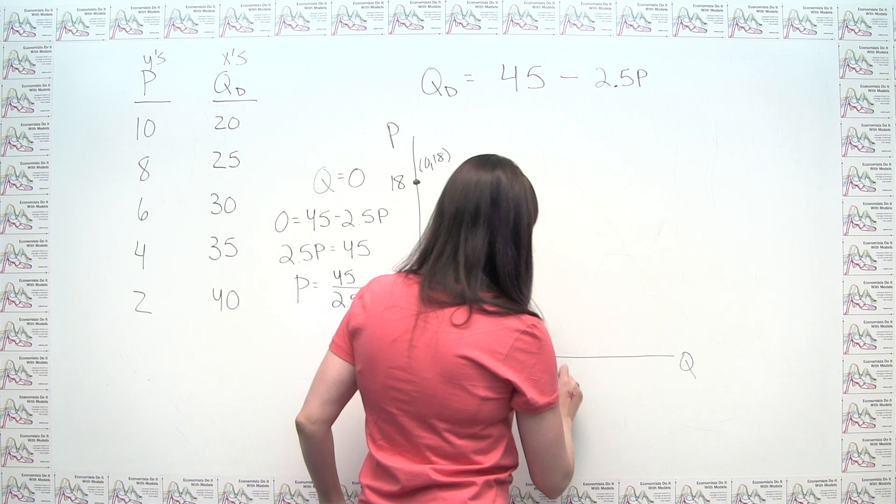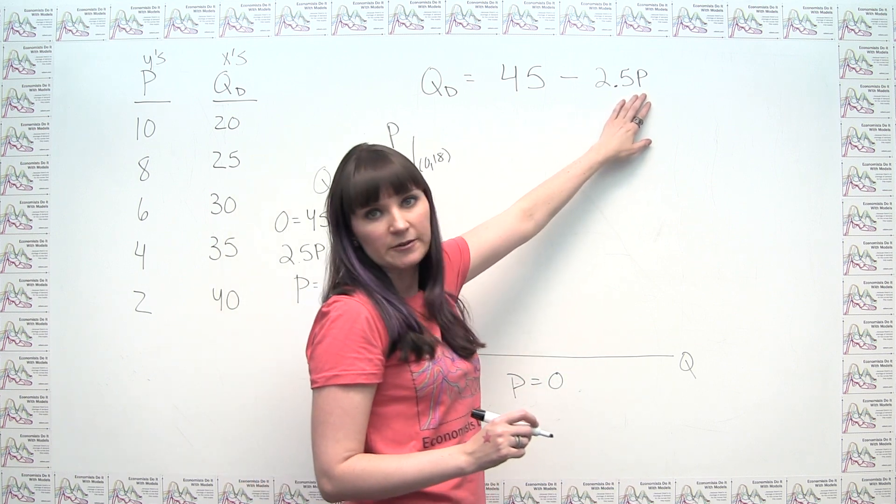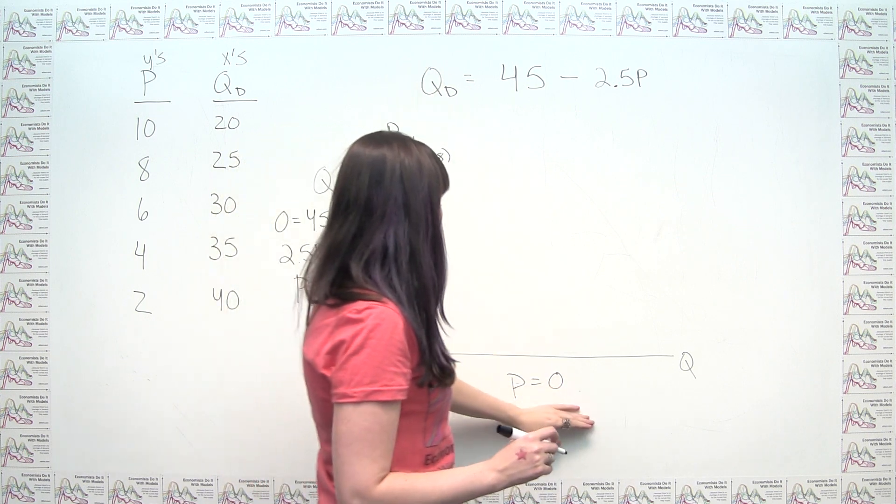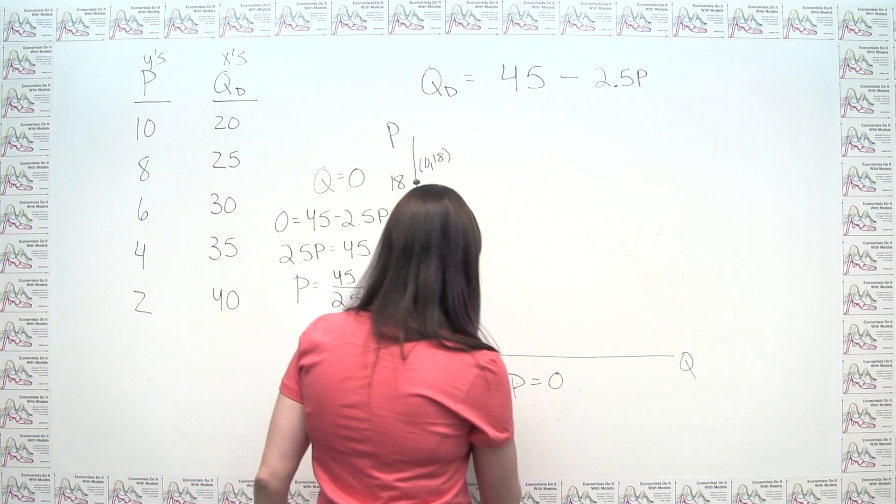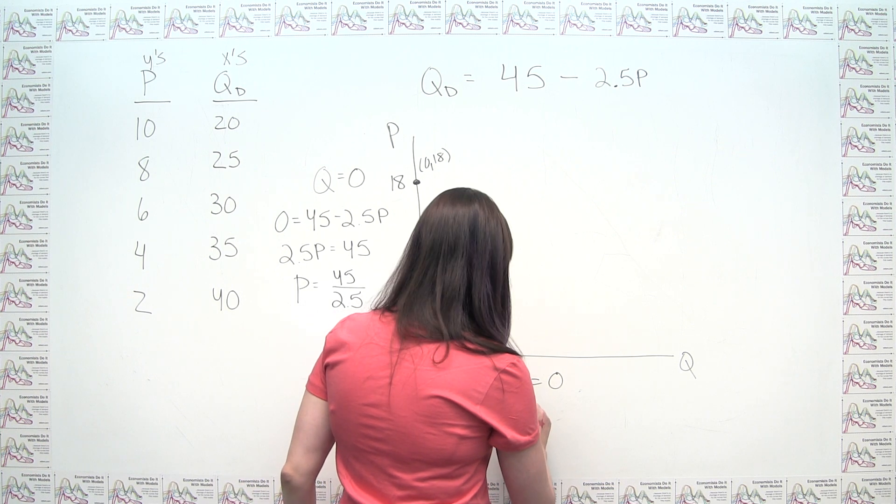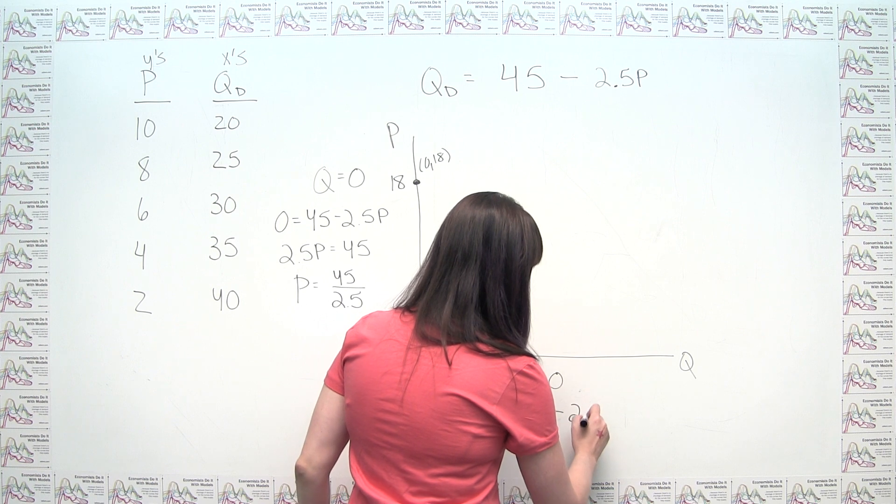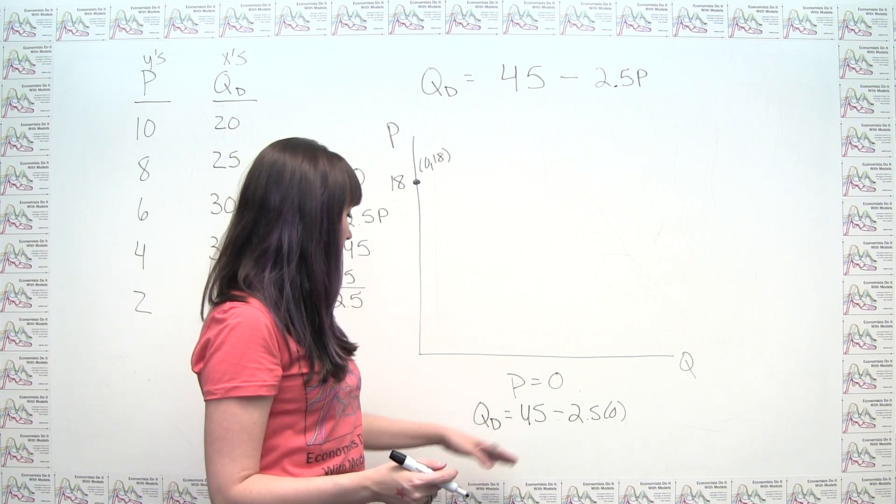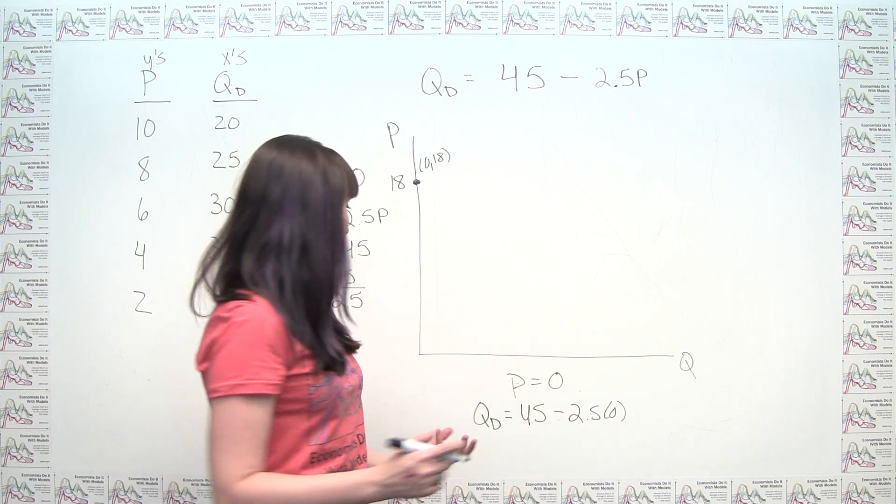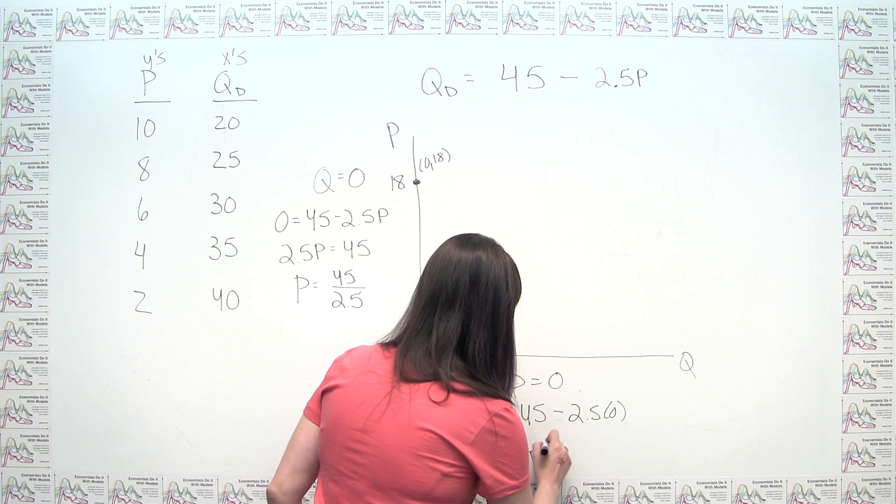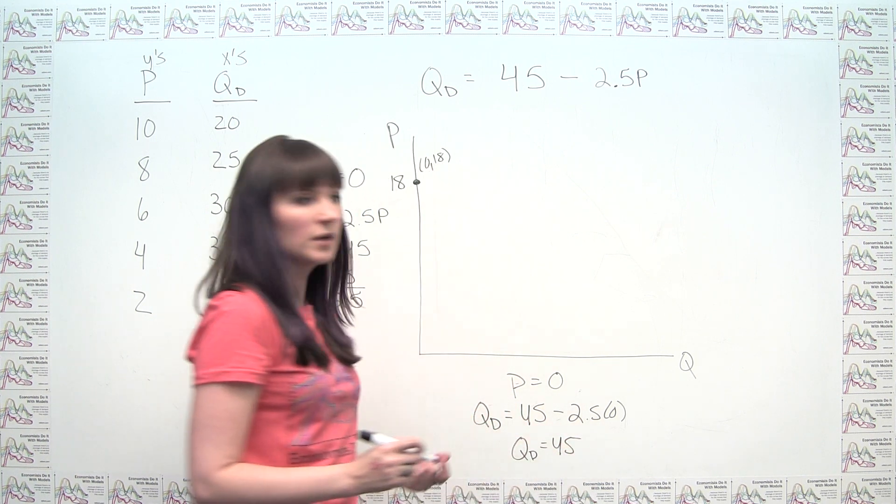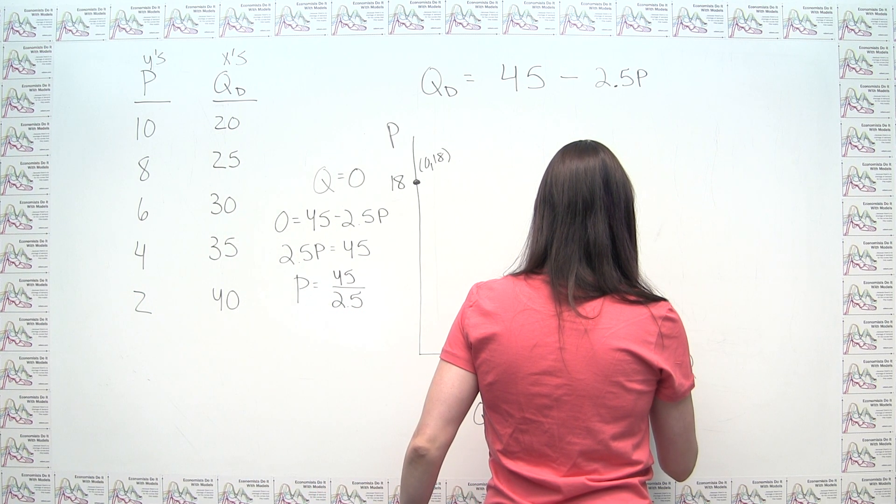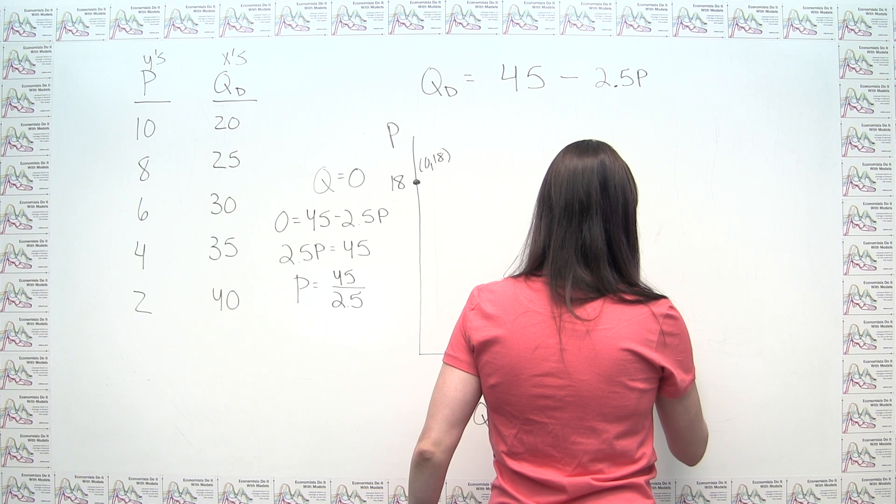And we can say, well, if price is zero and we plug in zero for price, what's our quantity demanded? So what we notice here is we say, okay, so our quantity demanded is equal to 45 minus 2.5 times zero. Well, 2.5 times zero is just zero, and 45 minus zero is just 45. So we can say that our quantity demanded when price is zero is just 45. Maybe we put that out here. And we notice that this is just the point 45, zero.